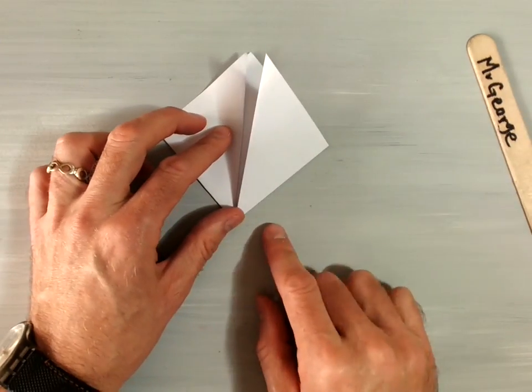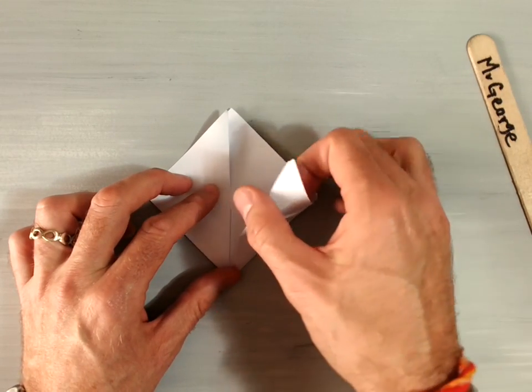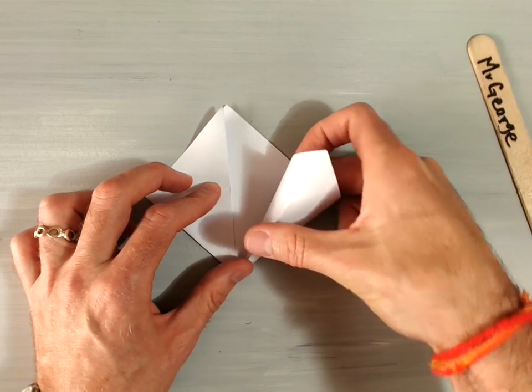Now we're going to do a little trick here. You're going to take this flap and bring it straight up and stick your finger inside here to separate the flap of paper.